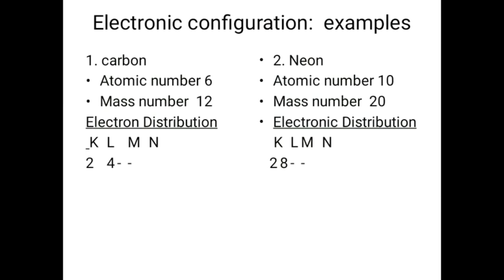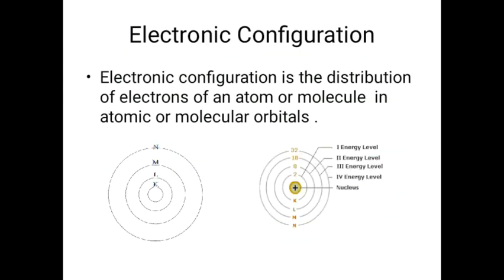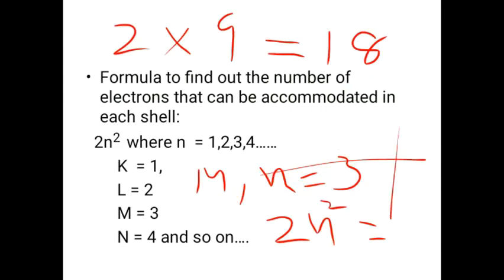Electronic configuration example: the first example is carbon. Carbon has atomic number equal to 6 and mass number equal to 12. To write the electronic configuration, we use K, L, M, N shells. The K shell can accommodate a maximum of 2 electrons, so we write 2 below K, and the remaining 4 electrons go into the L shell.